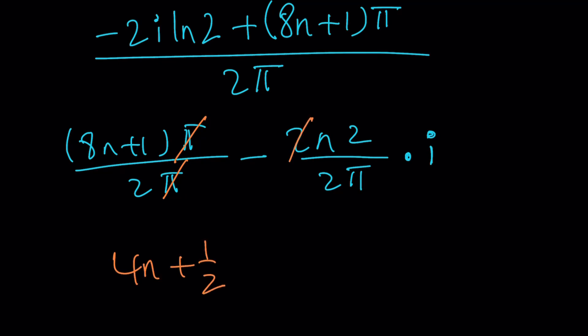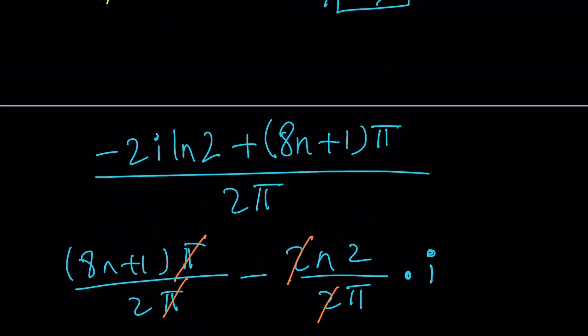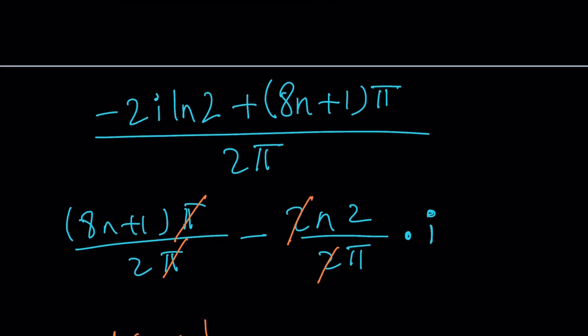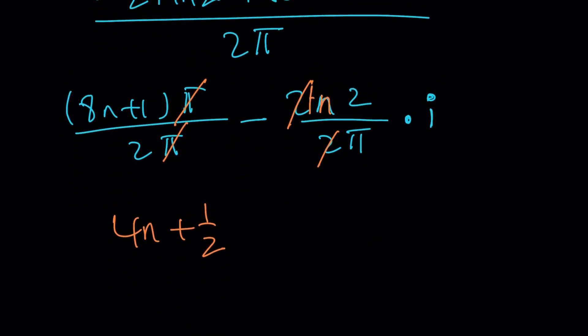And then these two are going to cancel out. Let's go ahead and see how we can simplify this a little bit more. That should be 2ln2. I'm sorry about that. So we have the minus ln 2 over pi multiplied by i.